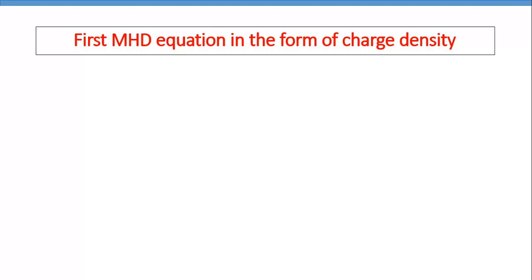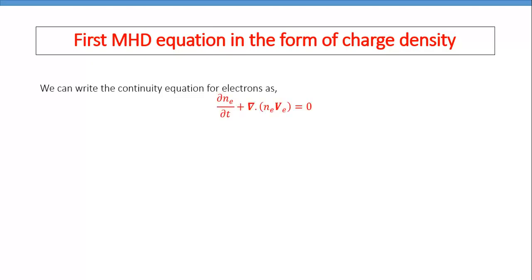This was a short introduction about the MHD equations. Generally, we have four types of MHD equations: the first, second, third, and fourth MHD equation.